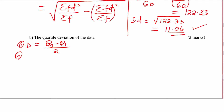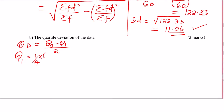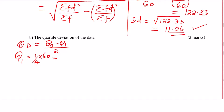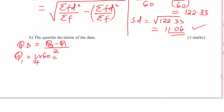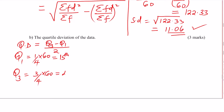Q1 is the lower quartile and Q3 is the upper quartile. To get Q1's position: one over four times total frequency 60 gives the 15th position. For Q3, it is three quarters multiply by 60, giving the 45th position.